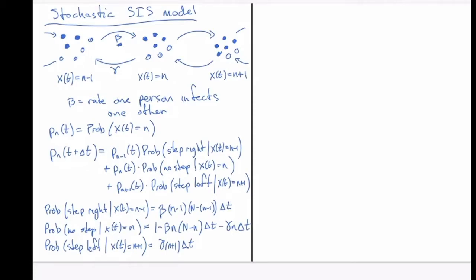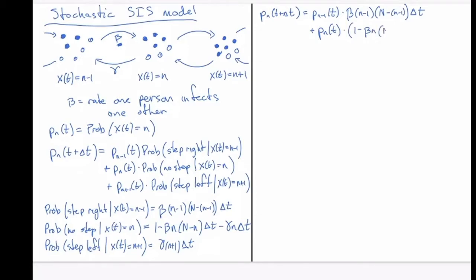Now we have all those pieces. We can assemble them into a single equation: P_n(t + delta-t) equals P_{n-1}(t) times beta(n-1)(N - (n-1)) times delta-t, plus P_n(t) times [1 minus beta·n·(N-n)·delta-t minus gamma·n·delta-t], plus P_{n+1}(t) times (n+1)·gamma·delta-t.